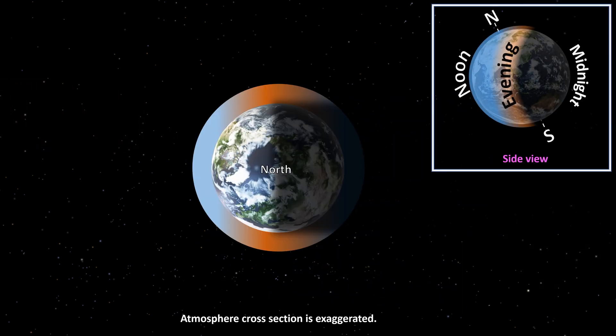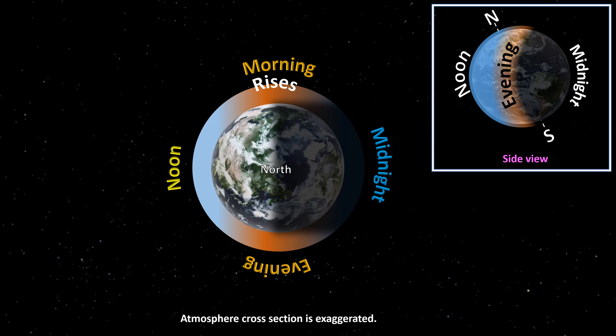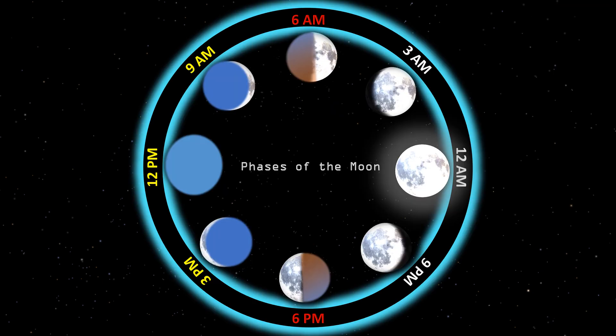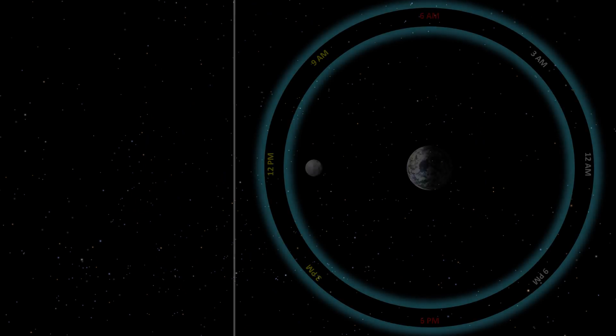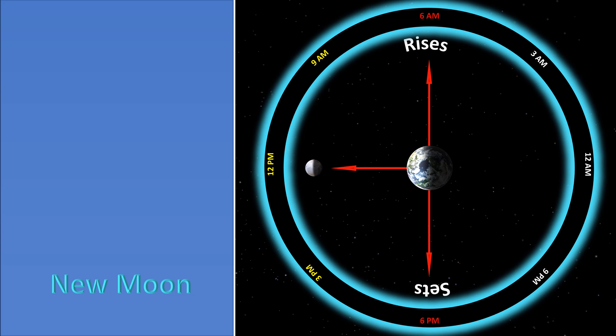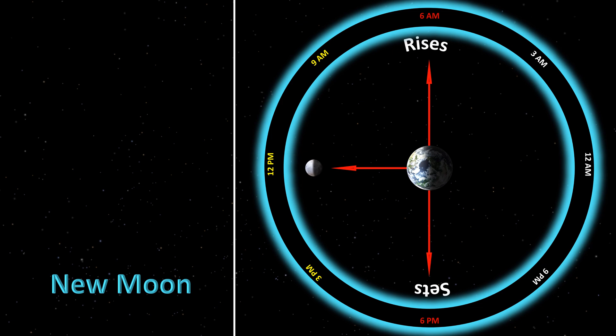As we know, our earth revolves around the sun and also rotates about its axis in the counter-clockwise direction. This rotation of the earth causes the rising and setting of the sun. But each phase of the moon has a different rising and setting time, because the moon is revolving around the earth. In this split screen, we will see on the left the phases of the moon as viewed from the earth, and on the right the moon's position in space with respect to earth, along with its rising and setting time. The new moon occurs when the sun and moon are on the same side of the earth.